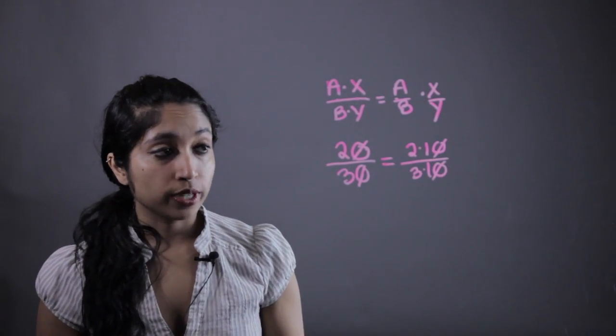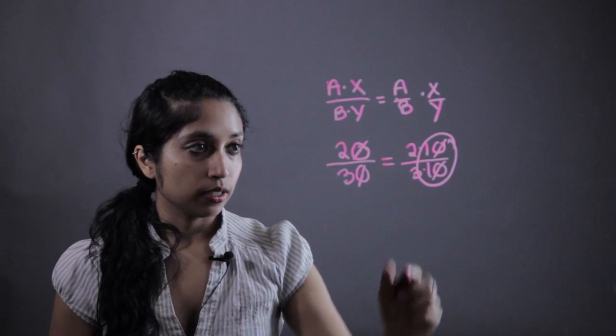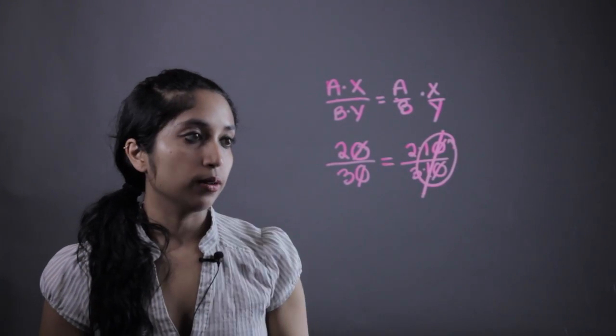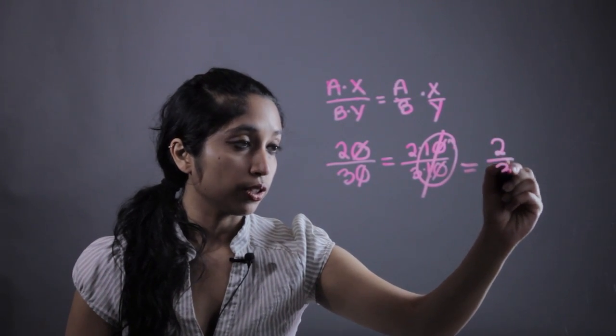Now, what we're going to look for next is the common factor. This case happens to be 10. And just cross that out. And that is going to simplify to 2 thirds.